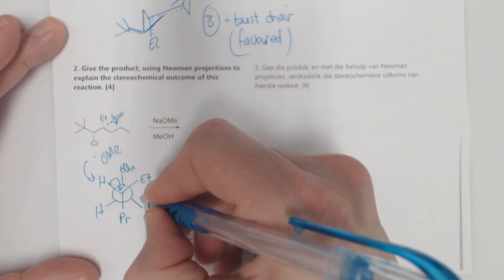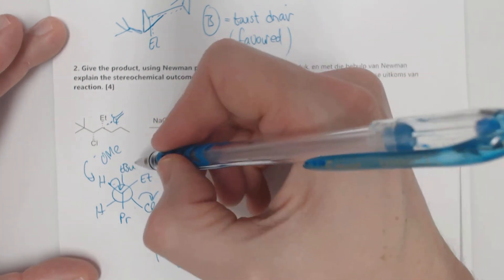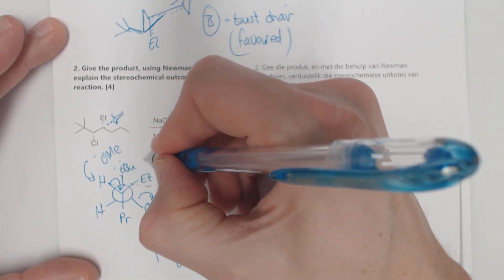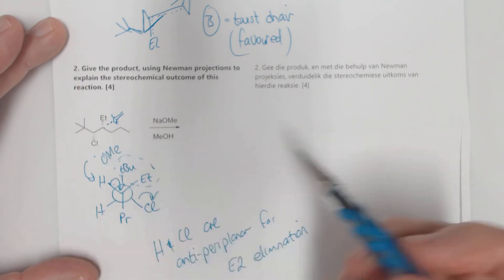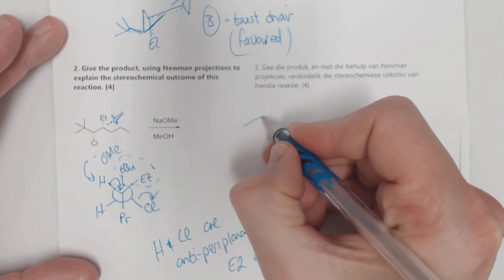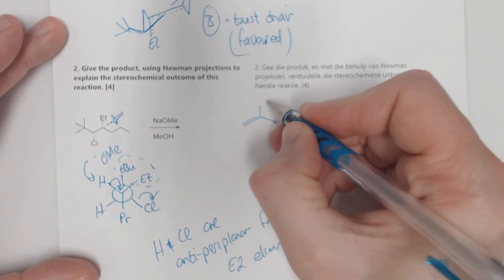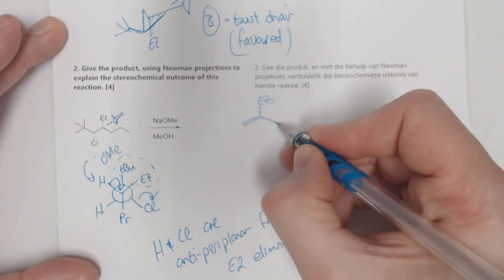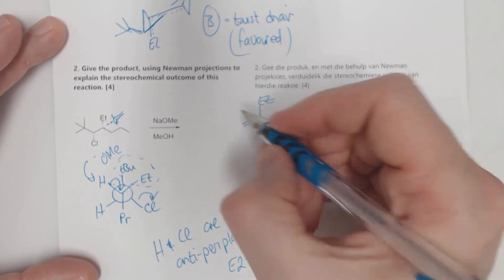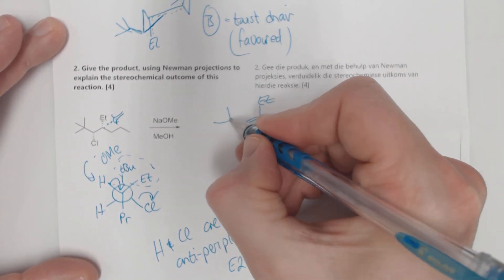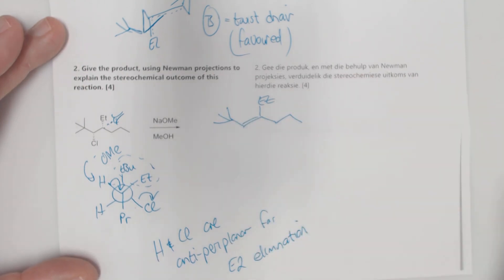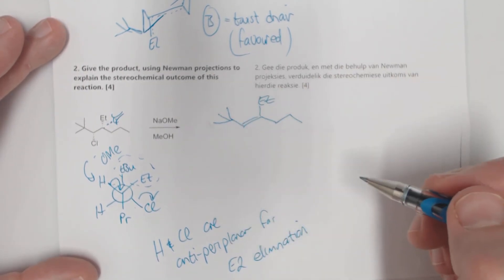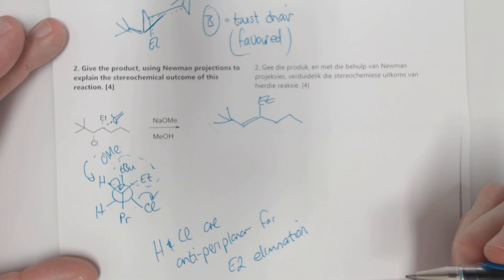So the Et is over there and the t-butyl is over there as well. So yeah, this would have been the correct product and that would have given you your four marks for that question.